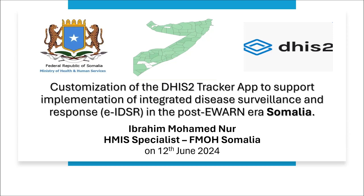Before I start, I would like to discuss how we came up with the development and use of the DHIS2 tracker. Before the DHIS2 tracker, Somalia had been using the electronic Early Warning Alert and Response Network system, used on an emergency case basis. The number of priority conditions reported was a little different from the unified integrated disease surveillance and response. I will discuss the use case of the DHIS2 tracker app, the transition from E-WARN to IDSR, and steps taken during the implementation.